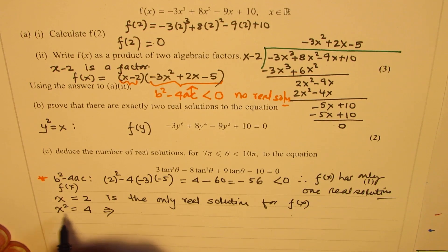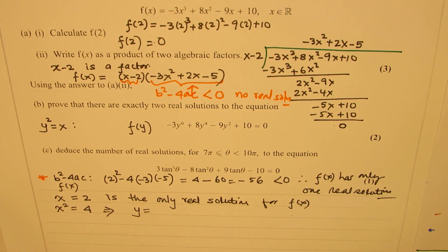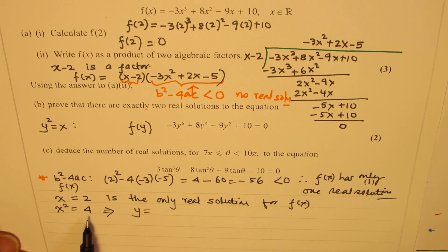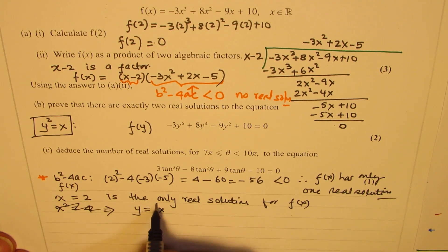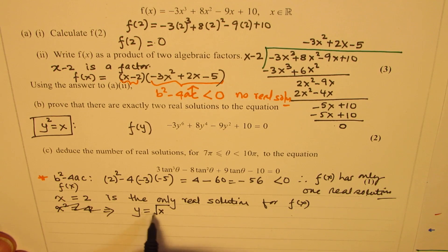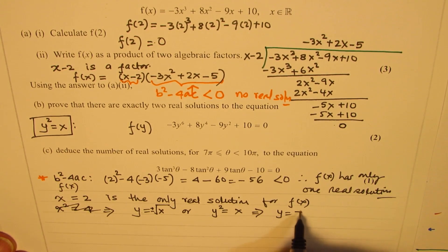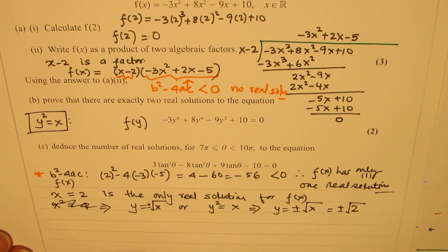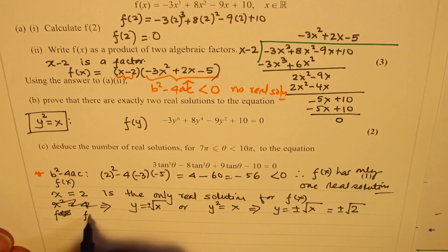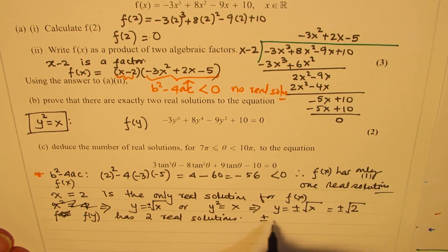x squared equals 2 — squaring both sides — that means y squared equals x implies y equals plus or minus square root of x. So y squared equal to 2 gives y equals plus or minus square root of 2. So these are the two real solutions. We can conclude that f of y has two real solutions, which are plus and minus square root of 2.